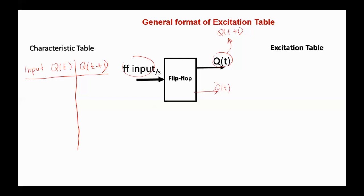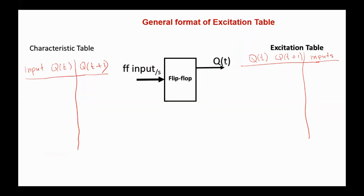Such a list is called an excitation table. So in the excitation table, we know the present state Q(T) and the next state Q(T+1), and we have to find out the inputs that cause this transition. So during the design, we know Q(T) and Q(T+1) and we have to find out these inputs. This is the general structure of any excitation table and the difference between the characteristic and excitation tables. Next, we will move to the excitation tables of the most commonly used flip-flops.